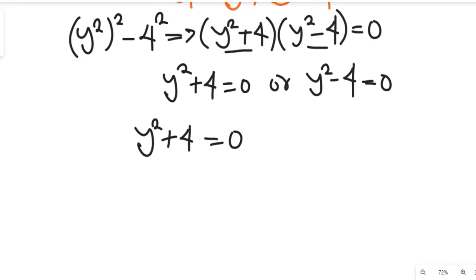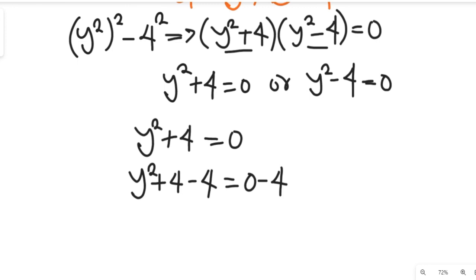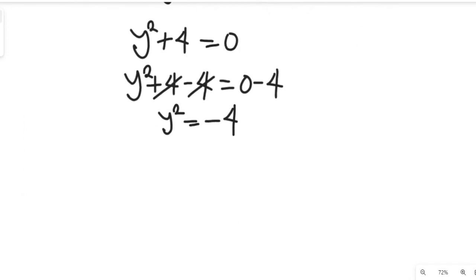Let's solve y squared plus 4 equal to 0 first. Subtracting 4 from both sides, we get y squared equal to negative 4. To find y, we take the square root of both sides, giving us y equal to the square root of negative 4.